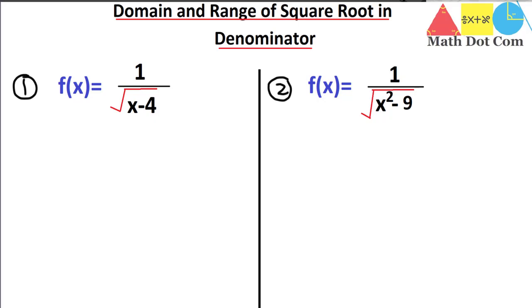There are two conditions that we need to apply on questions like this for finding the domain and range. The first condition is for the fraction: the denominator should not be equal to zero. We cannot divide by zero — it will give you an undefined number.